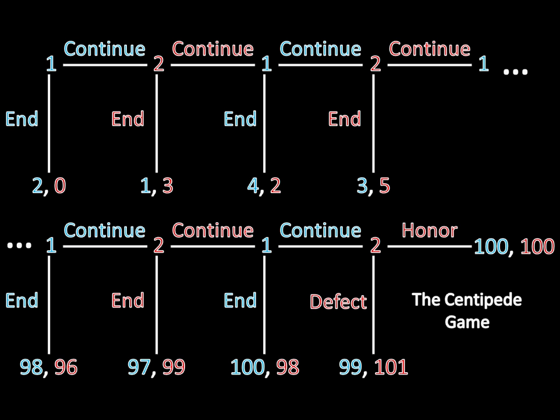So here's the game. It looks a little bit complicated, but in fact it's actually very straightforward. Player 1 begins the game by choosing whether to continue or end. If he ends, he gets 2 and she gets 0. If he continues, then player 2 moves. If she continues, then we keep playing this game. If she ends, then she gets 3 and player 1 gets 1.